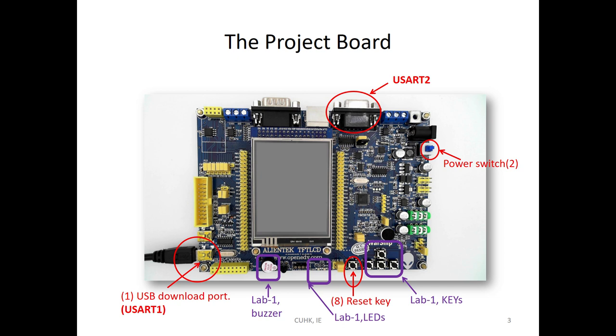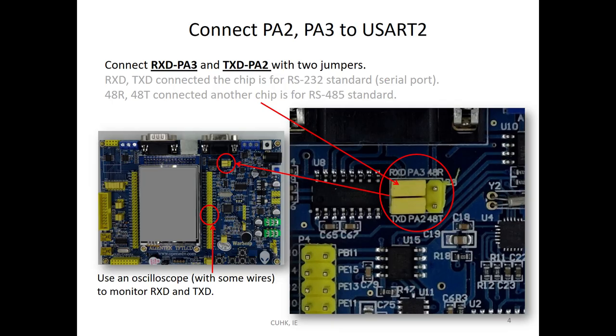This lab we will use the UART board. The UART one we used in that one for download. Then another UART tool we will use today. UART tool, please check the jumper. PA3 connect to RxD and PA2 connect to TxD.